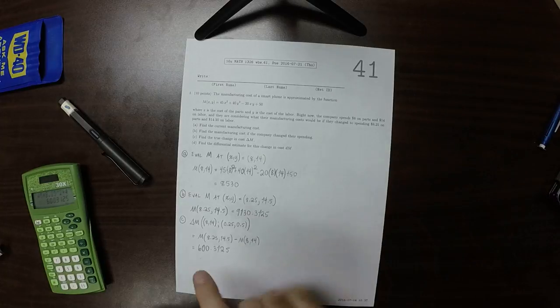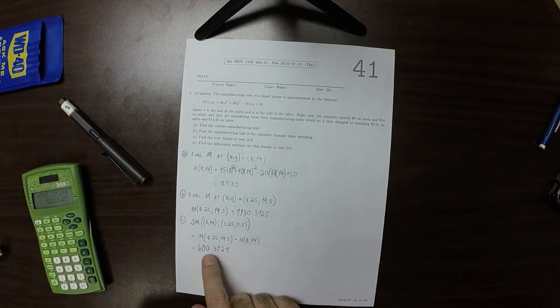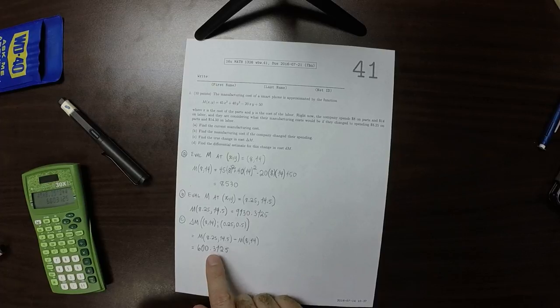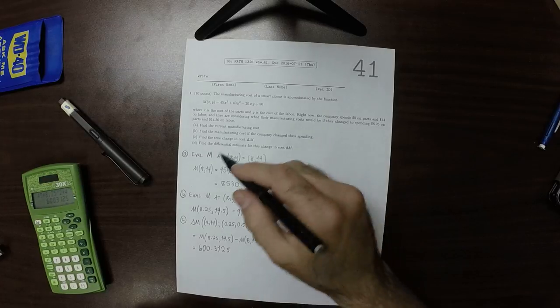So the real change, the true change in cost is $600.31. And these are smaller than cents. So now, part D.